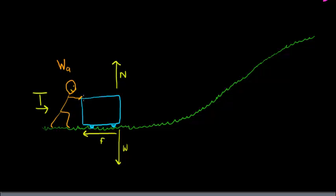He is applying energy to this system — applying work. Now, that energy needs to be translated. Some of that energy is going into overcoming friction, so there is work being done by the frictional force. The frictional force is in the opposite direction of motion, so it is negative, which means it is stealing some of the applied energy.